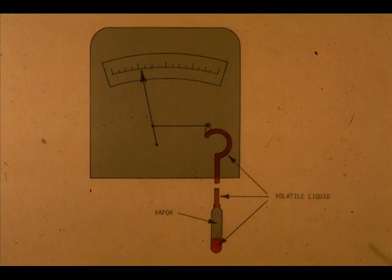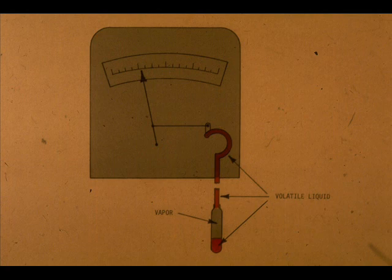Vapor pressure systems fall into four subclasses. First, there are those with bulb temperatures higher than ambient. Notice the measuring element and capillary tube are full of liquid.